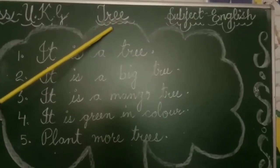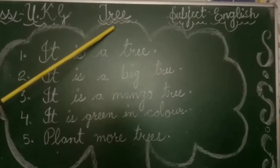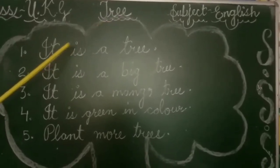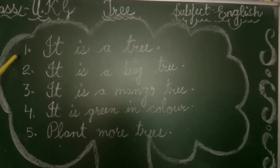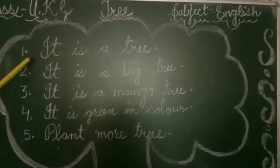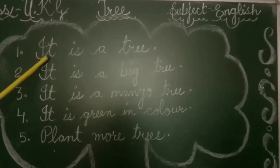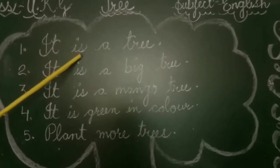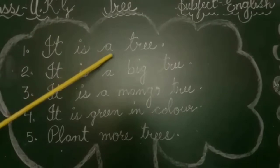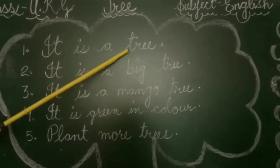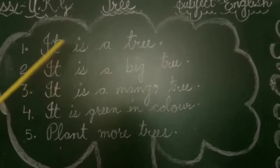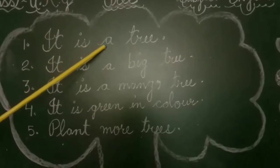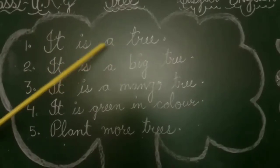Tree means pear. Our first sentence is: I-T, I-S, it is a T-R-E-E, Tree. It is a tree.